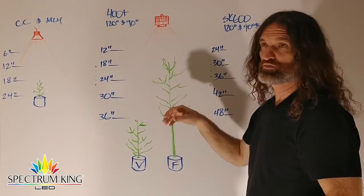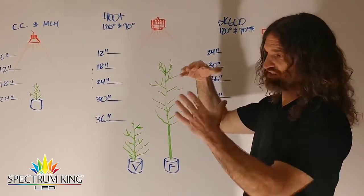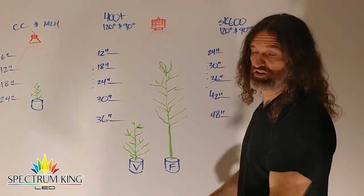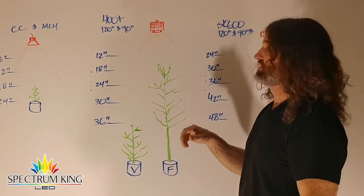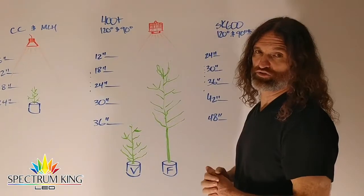The 400+ 90 is meant for higher ceilings and taller plants. It's more focused to penetrate deeper. If you have a plant that's five feet tall or three to four feet of canopy, the 400+ 90 is a great tool for that job.